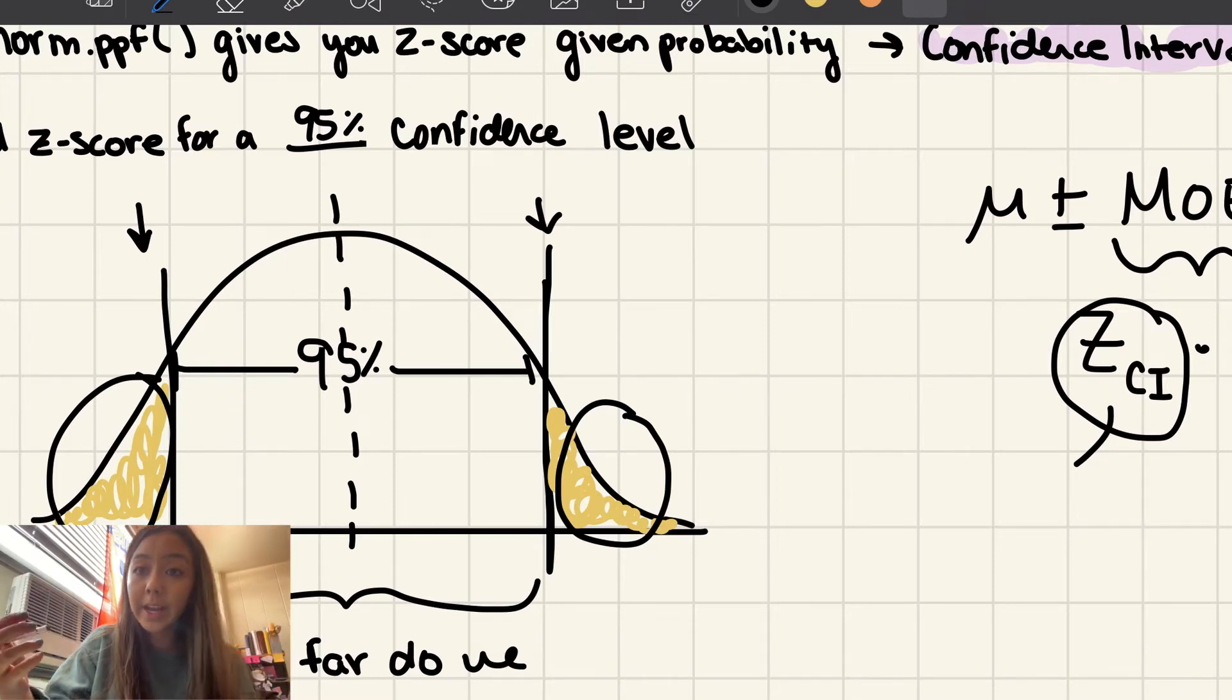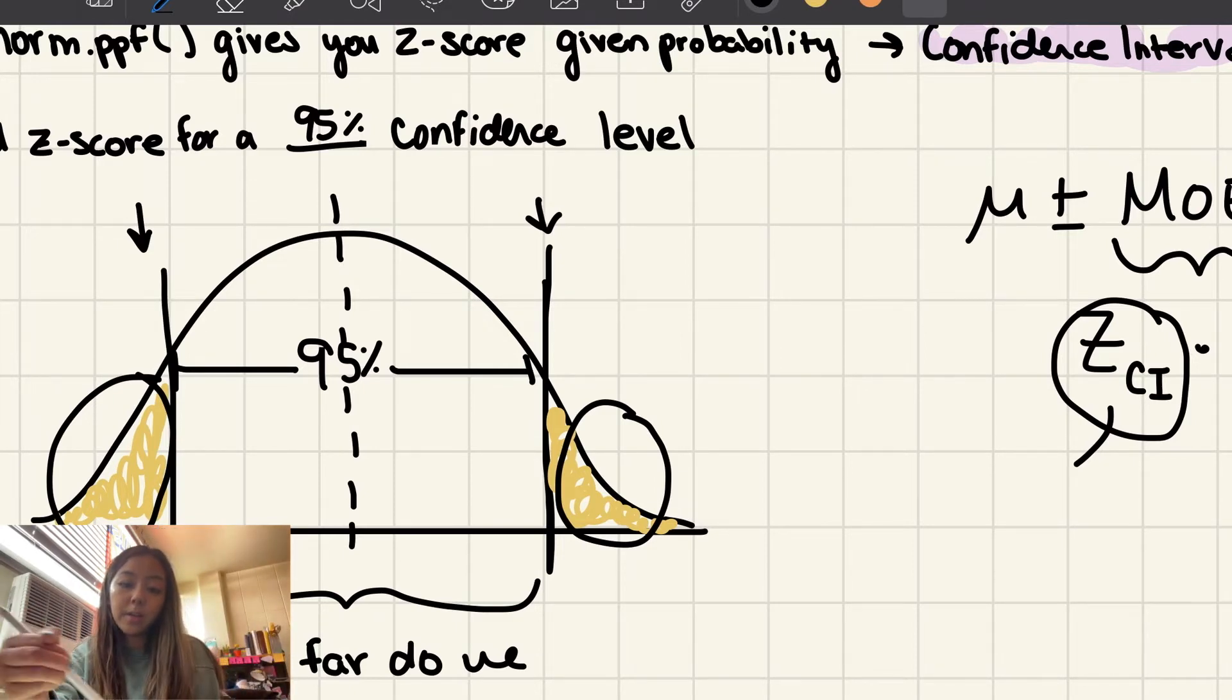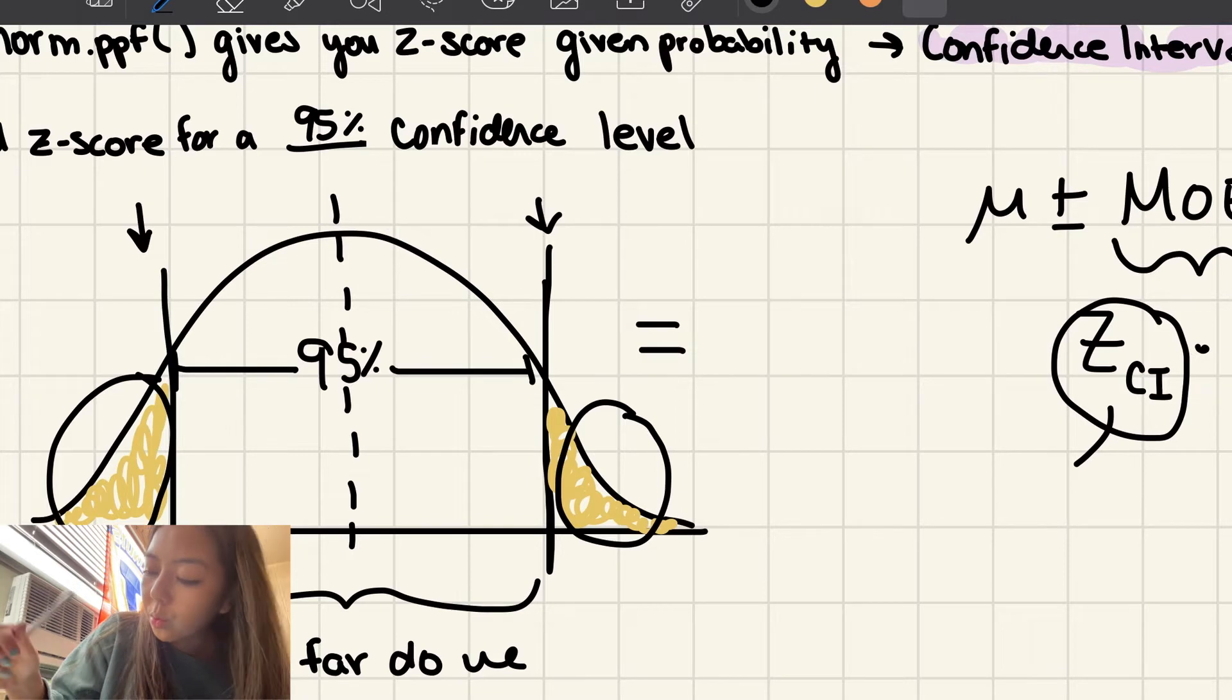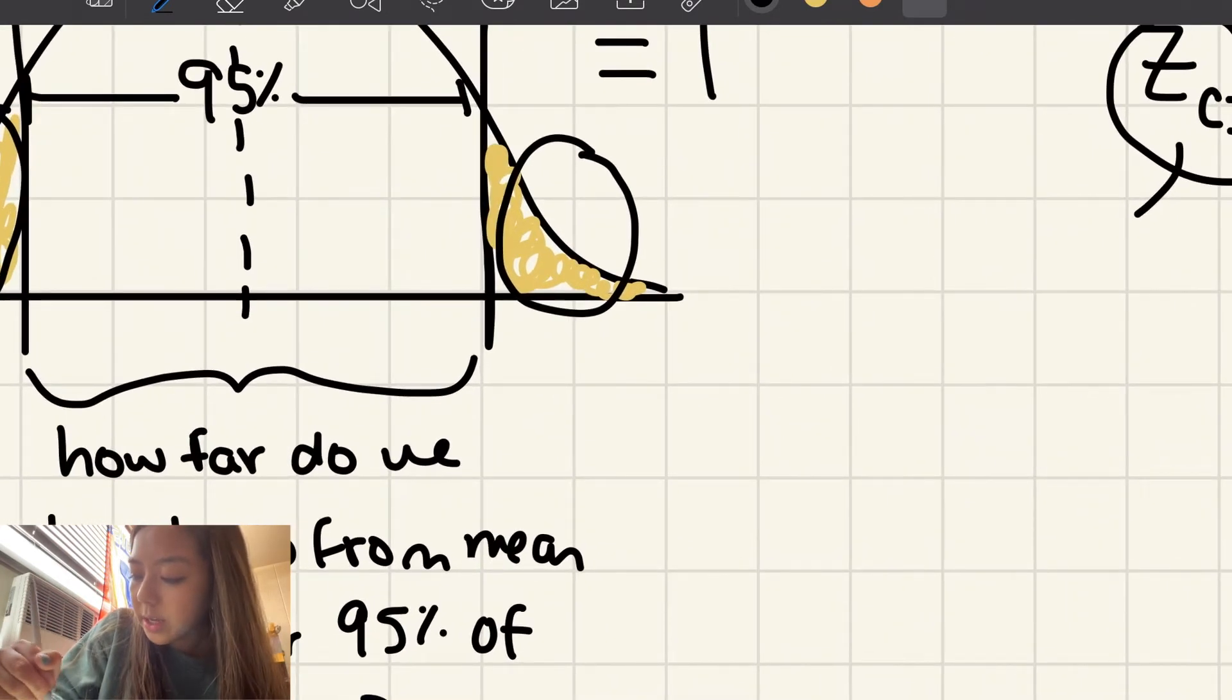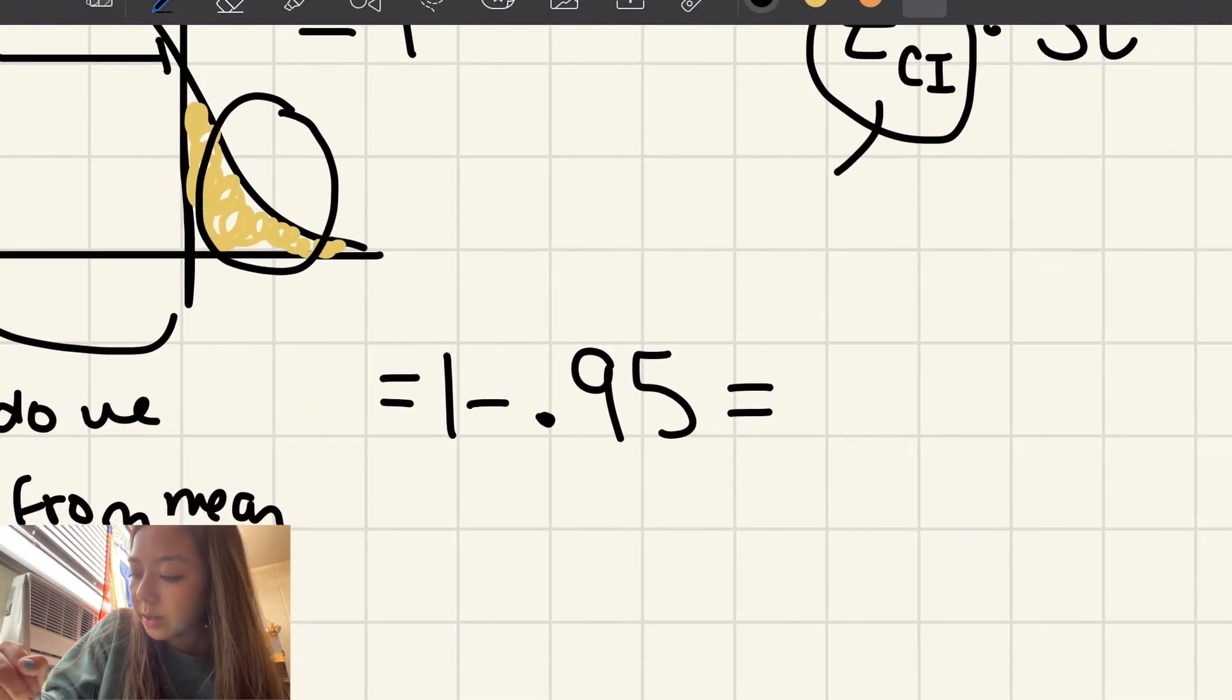And we can actually find the area of these two tails because now that we know that it's 95% in the middle, we can find the area of these two tails because in a normal curve, the area of the curve is going to be equal to 1. And to find these two tails, you can do 1 minus the middle area, which is already accounted for 95%. 1 minus 0.95 is equal to 0.05.